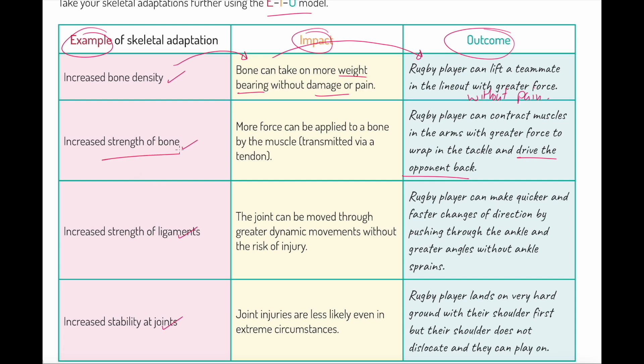What about increased strength of ligaments? The joints can be moved through greater dynamic movements without the risk of injury. So a rugby player can make quicker and faster change of direction by pushing through the ankle at greater angles without ankle sprains. They can be more dynamic and experience less injury because those ligaments are more stable.